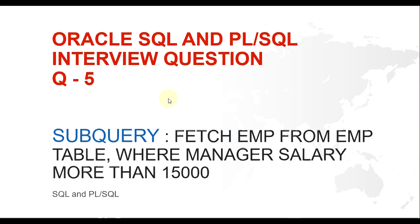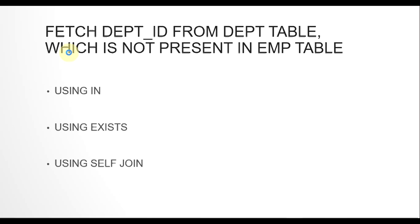Hello guys, my name is Kishan and today we are going to look at an Oracle SQL interview question related to subqueries, where you are asked to fetch records when they meet a specific condition. The example is to fetch all employees from the employees table where their manager's salary is greater than fifteen thousand dollars. You can do this using an IN statement subquery, using the EXISTS clause with correlated subqueries, or with a self-join — I'll show all three ways.